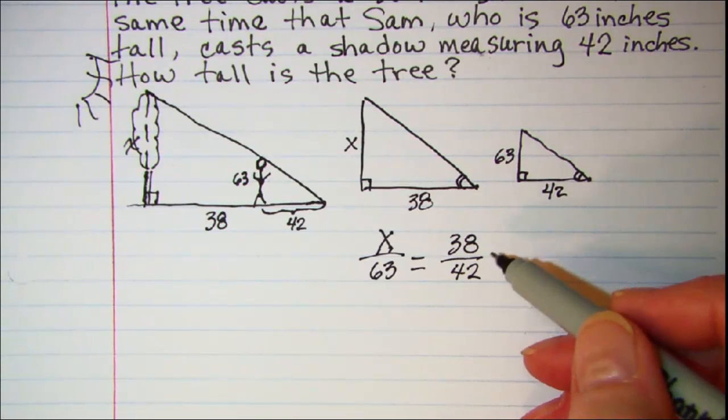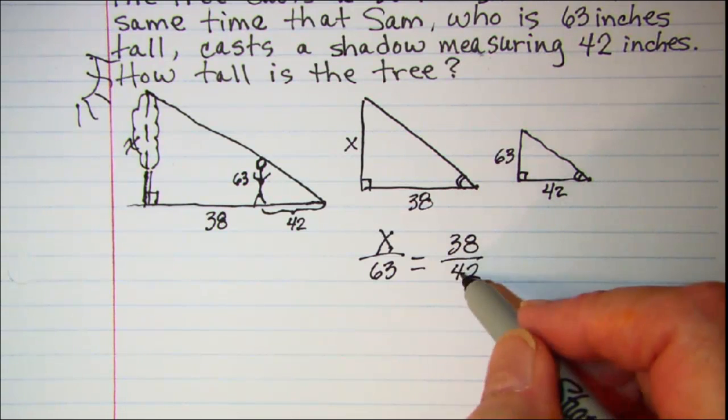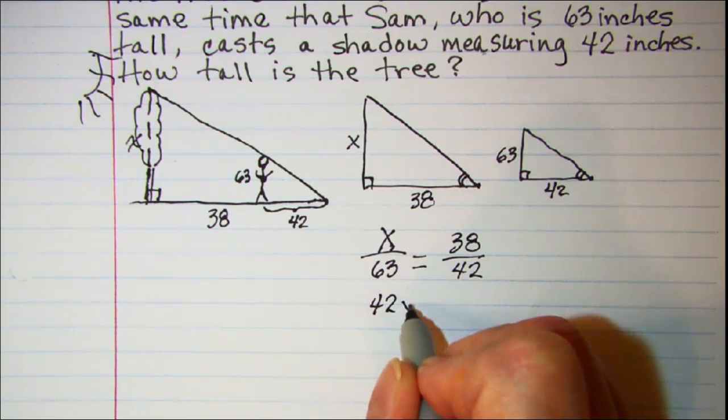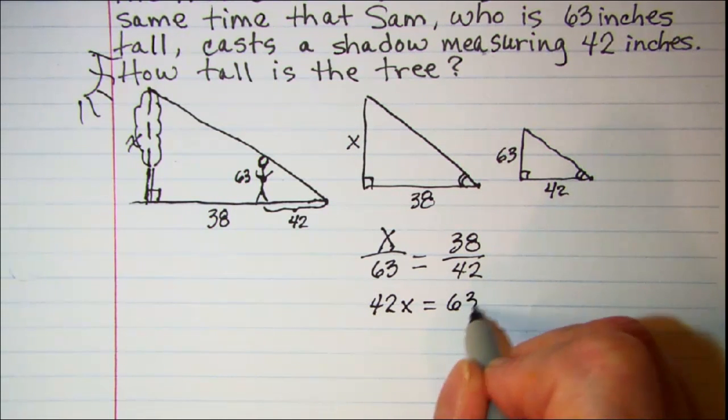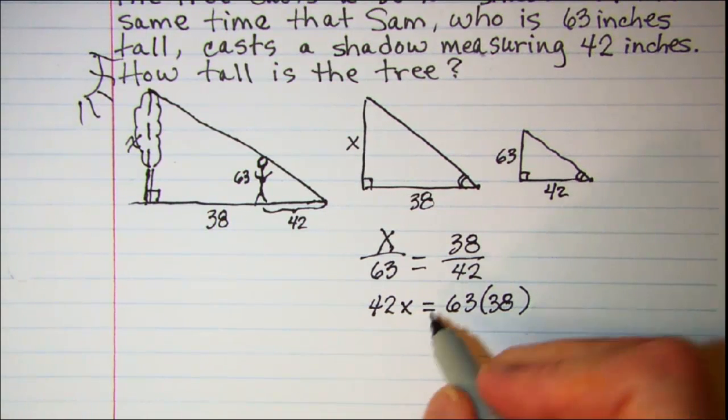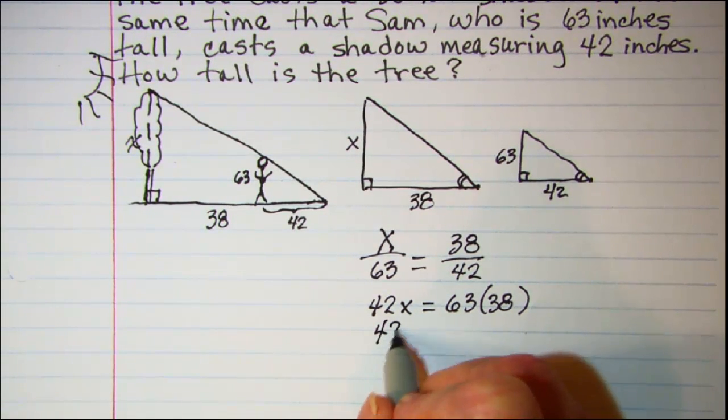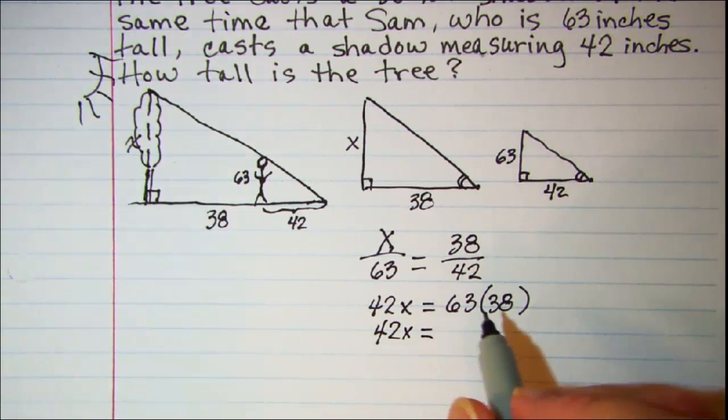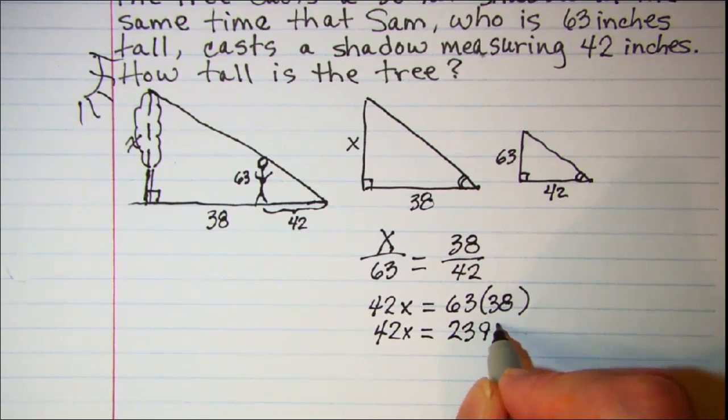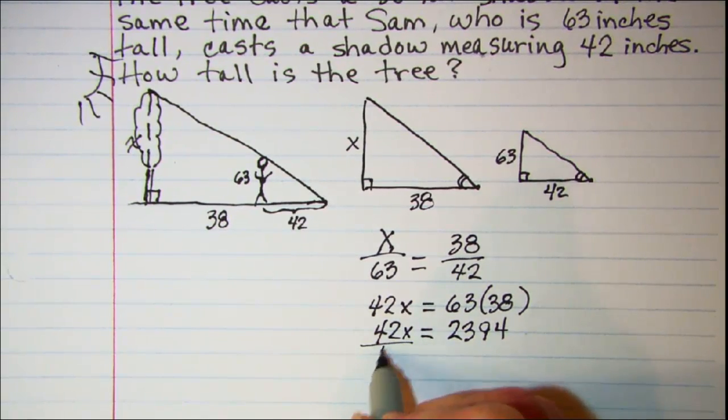So if we do cross multiplication here we have 42 times X is equal to 63 times 38. So copying here on the right side we have 2394. Divide both sides by 42.